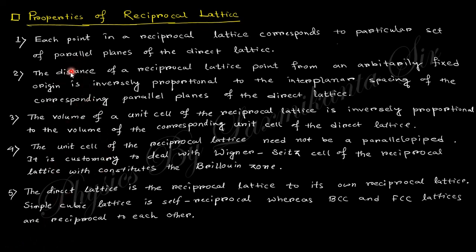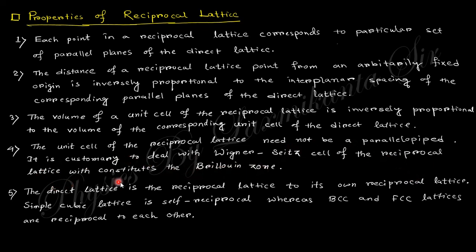Summary of properties of the reciprocal lattice: each point corresponds to a particular set of parallel planes; the distance of a reciprocal lattice point from an arbitrary fixed origin is inversely proportional to the interplanar spacing; the volume of the unit cell of the reciprocal lattice is inversely proportional to the direct lattice unit cell; the reciprocal lattice uses the Wigner-Seitz cell, which constitutes the Brillouin zone; and the reciprocal of the reciprocal lattice is the direct lattice itself.